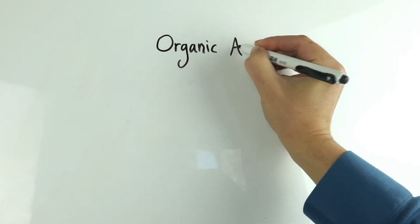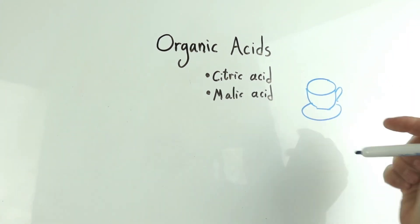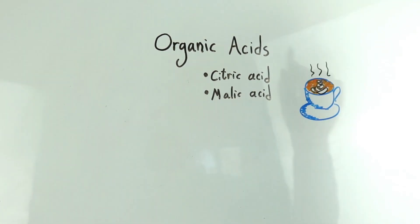Next are organic acids. The mesocarp and seed contain acids, such as citric and malic acid. These will break down a bit during the roasting process, but will contribute to the acidity of the coffee.